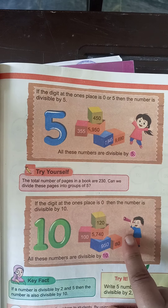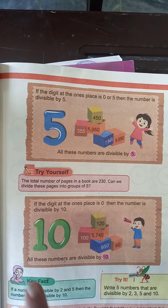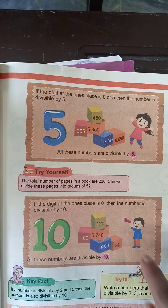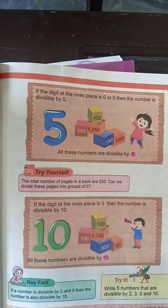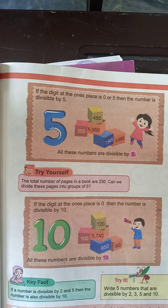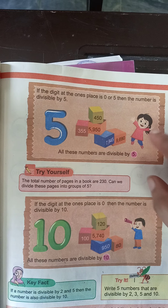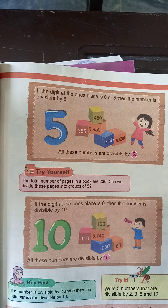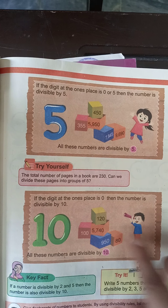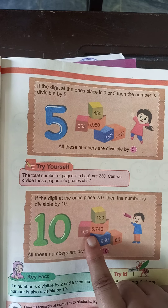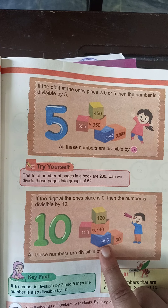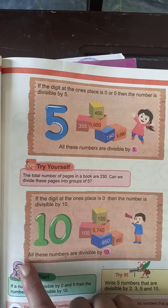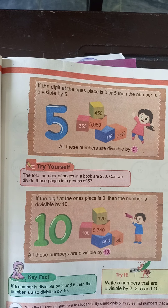Five aur ten mein jo difference hai, woh five ka hai. Divisibility rule ten ke according, aapke paas one's ka house mein sirf zero chahiye. But divisibility rule five mein aapke paas one's ka house mein zero or five chahiye. Toh it means isko bahut asani se find kar saktay hain. Yaha pe kuch numbers given hain: one hundred twenty, five thousand seven hundred forty, one hundred, nine hundred fifty, and eighty. All these numbers are divisible by ten.